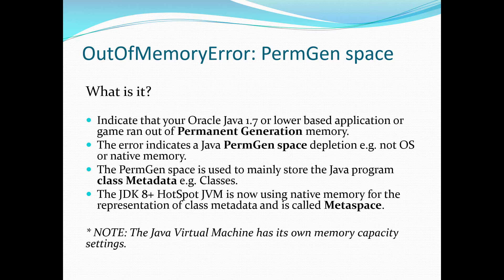Now, the JDK8 plus the changed approach — similar to what you may have seen with IBM J9 or even Oracle JRockit — they are now storing that memory directly to the native space. That's why you will see a different error, and we'll actually review that through a separate video. But right now, keep in mind, this error indicates depletion of PermGen Space for your class metadata.